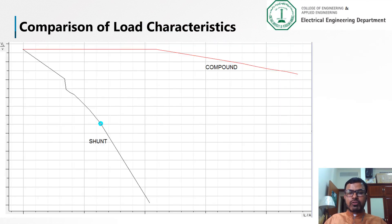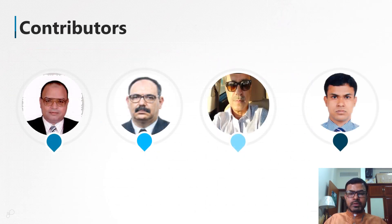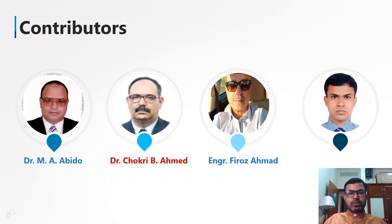Plotting voltage versus current for the shunt and compound generators yields a comparative graph showing their respective load characteristics. The contributors of this video are Dr. Muhammad Abidu, Dr. Shukri Ahmed, Engineer Firouz Ahmed, and Dr. Muhammad Shafiullah.